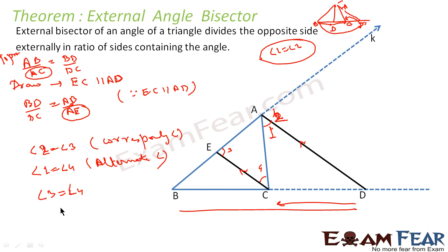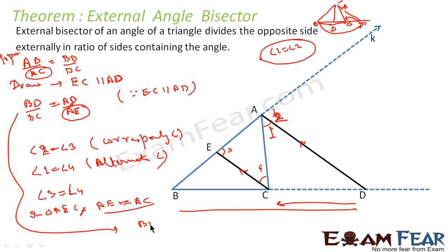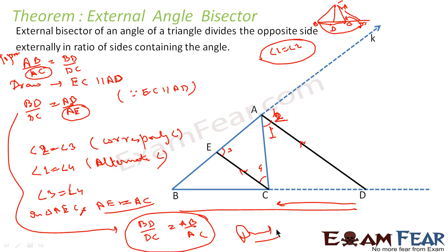Now we have proved that angle 3 is equal to angle 4, and that is what we needed. Since angle 3 equals angle 4, in triangle AEC we have AE equal to AC. Once AE equals AC, we substitute back into our formula and the proof is complete. Hence we have proved using the reverse engineering approach — approach the problem from the reverse direction and we get the answer very easily. We drew EC parallel to AD, applied the theorem to get BD/DC = AB/AE, then proved AC = AE by showing angle 3 = angle 4.